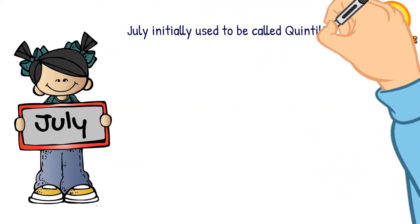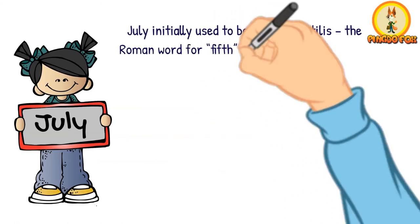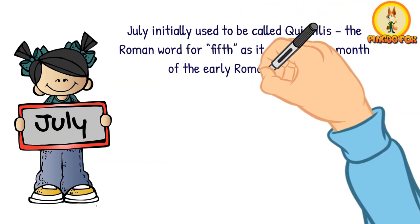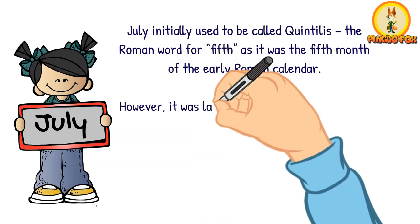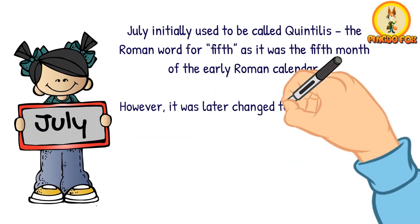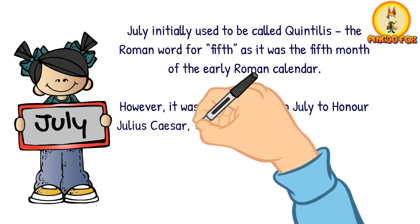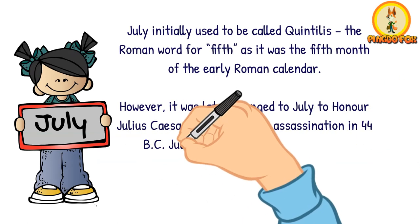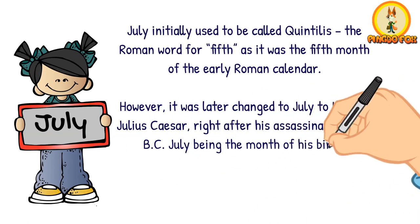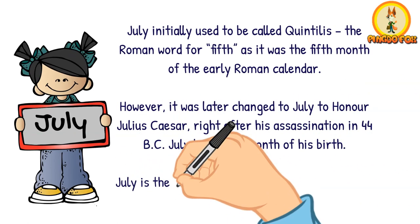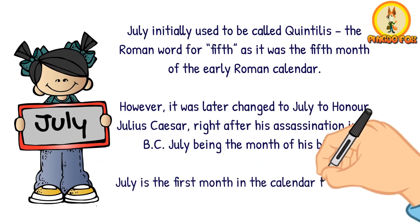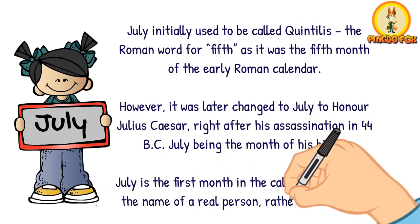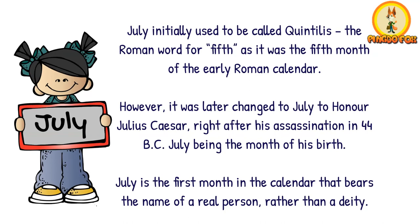July initially used to be called Quintilis, the Roman word for fifth, as it was the fifth month of the early Roman calendar. However, it was later changed to July to honor Julius Caesar right after his assassination in 44 BC, July being the month of his birth. July is the first month in the calendar that bears the name of a real person rather than a deity.